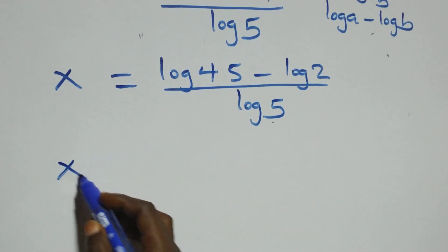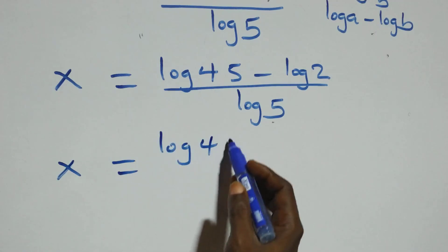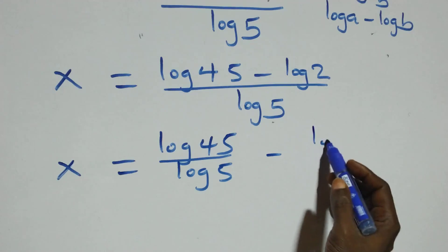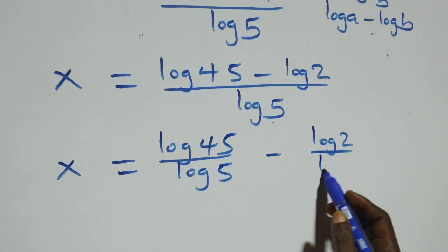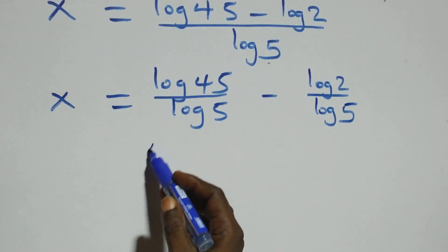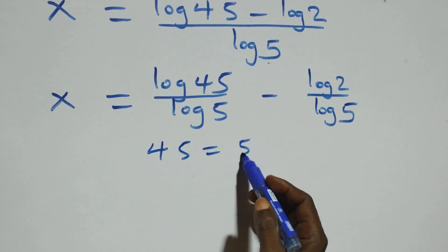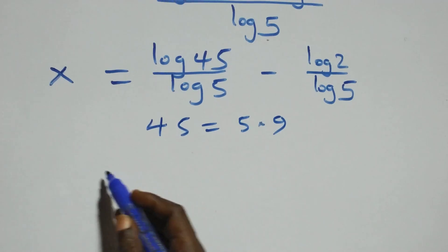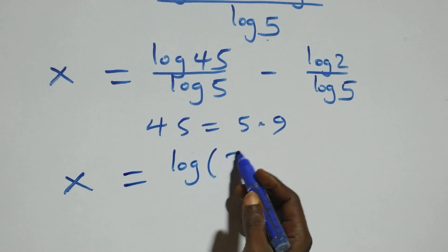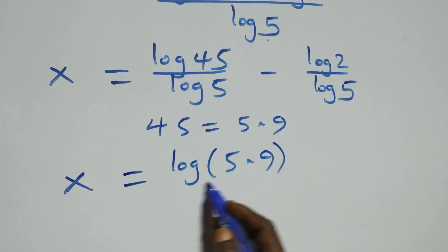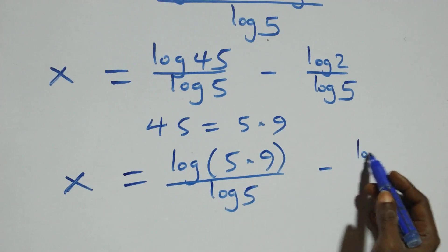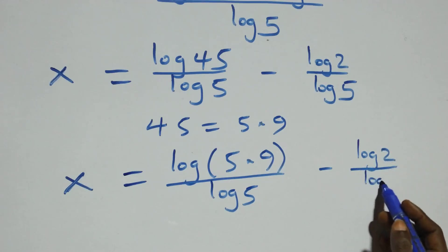From here we separate this into two fractions: x equals log 45 over log 5 minus log 2 over log 5. Then we can write 45 as 5 times 5 times... wait, as 5 times 9, which gives us x equals log(5 times 9) over log 5 minus log 2 over log 5.